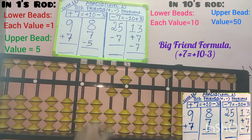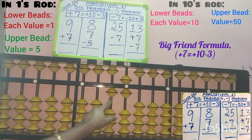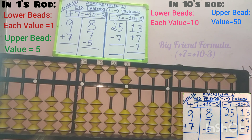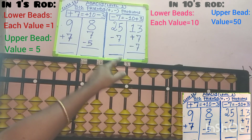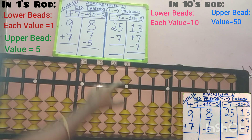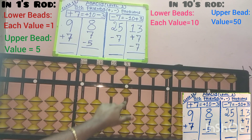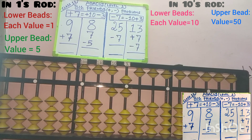In the 10s place, its value is 10. Hence by doing plus 10 minus 3, 7 is added using the big friend concept. Now check the answer: in the 10s slot, 1 bead touches the answer point, and in the 1s slot, 5 and 6. So 16 is the answer for this question.